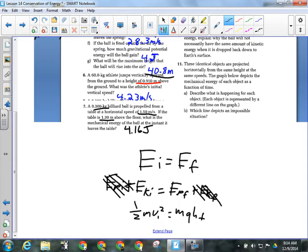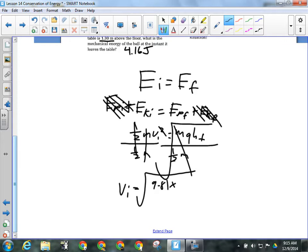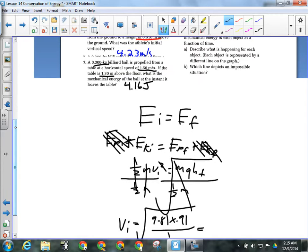Now, I've got EKI equals EPF. So, that means one-half MVI squared equals MGHF. Can I solve for V? Is that what the question asked me for? They said, what's the athlete's initial vertical speed? So, how do I get VI by itself? Divide both sides by one-half of M. What happens to M? It cancels. What else do I have to do? Square root. Are these all kind of the same? That's what I'm trying to, that's the point I'm trying to make. They're all pretty much the same. As long as you can figure out which energies are involved at each point, you're pretty much set because the rest of it's always going to be the same.